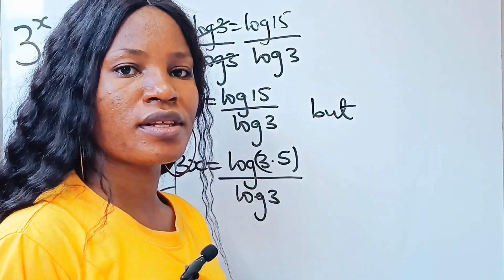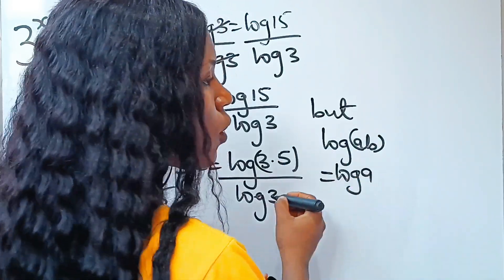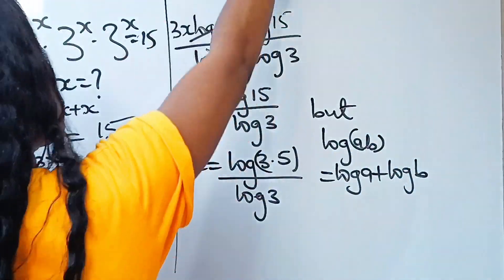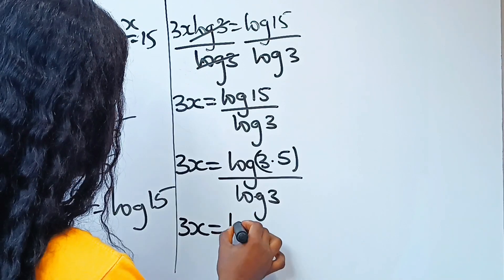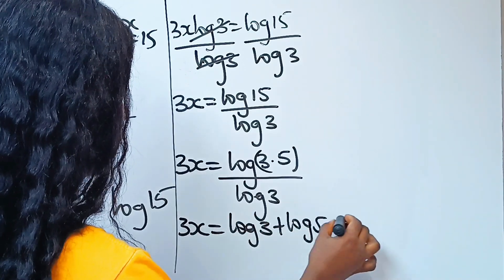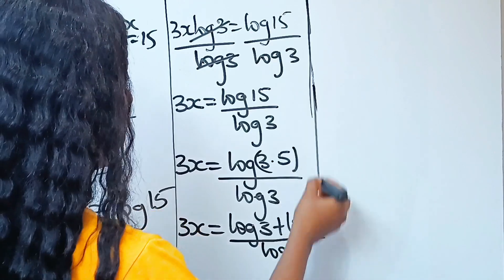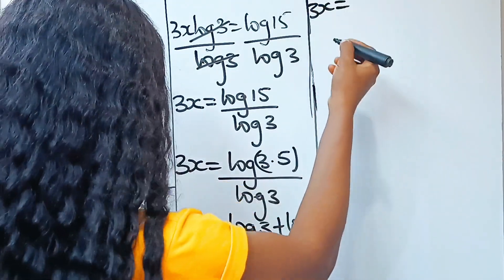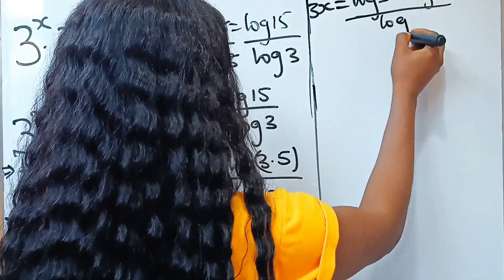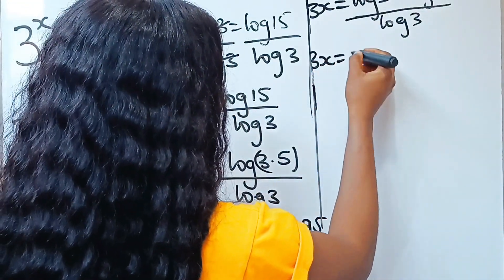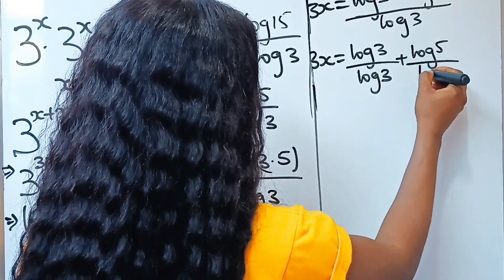The law of logarithms states that log AB is equal to log A plus log B. So if we apply that, we can express this as 3x is equal to log 3 plus log 5, all divided by log 3. We can then write that as 3x is equal to log 3 divided by log 3, plus log 5 divided by log 3.